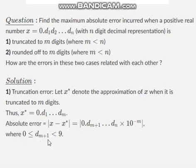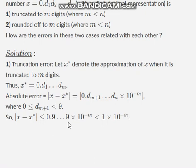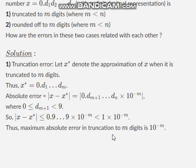Now the important thing to note is that d(m+1) is between 0 and 9, and similarly d(m+2) is between 0 and 9. So the absolute error is bounded above by 0.999... × 10^(-m), which is always less than 1 × 10^(-m). Therefore the maximum absolute error in the truncation case, when the number is truncated to m digits, is 10^(-m).